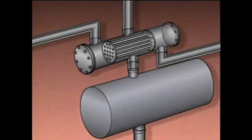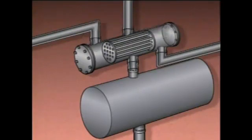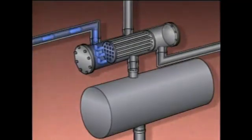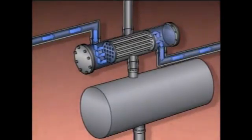On this type of condenser, the cooling water heads may also be referred to as water boxes. During operation, on the tube side of the condenser, cooling water enters through the inlet head, passes through the tubes, and flows out of the condenser through the outlet head.